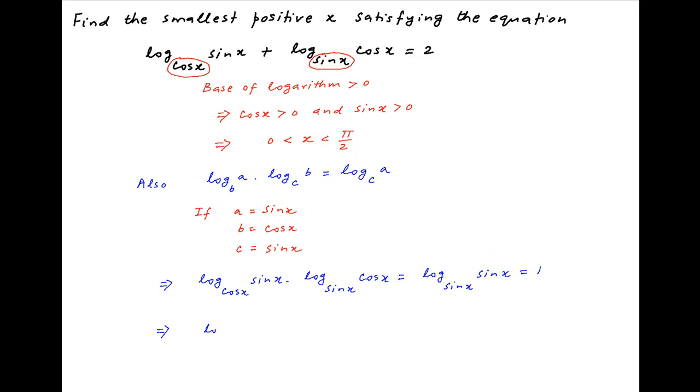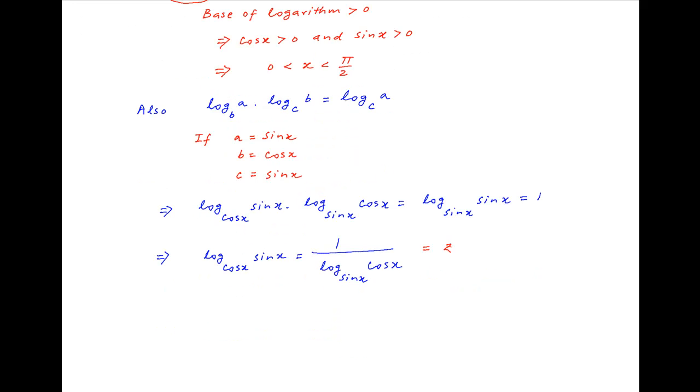It therefore follows that log of sin x to the base cos x is equal to 1 upon log of cos x to the base sin x. Let's assume that this is equal to z.